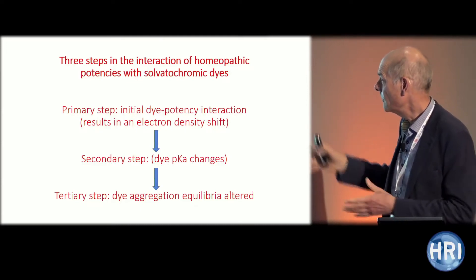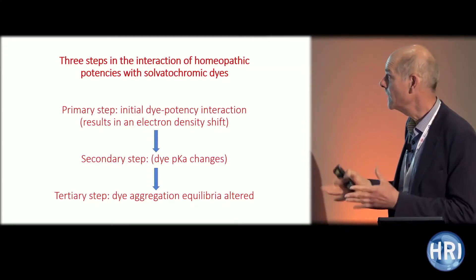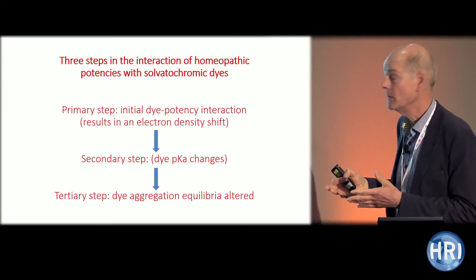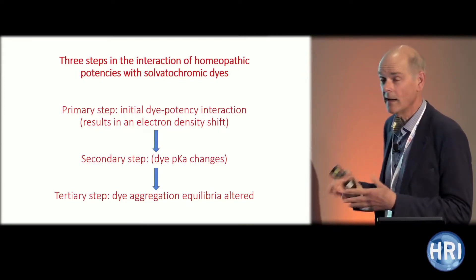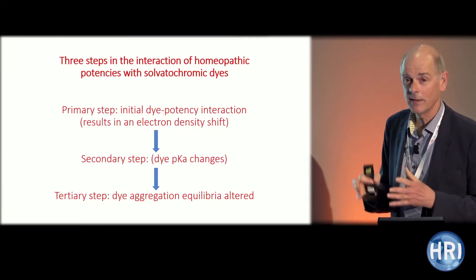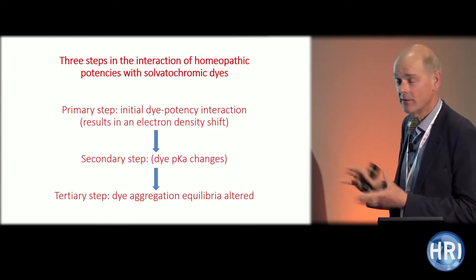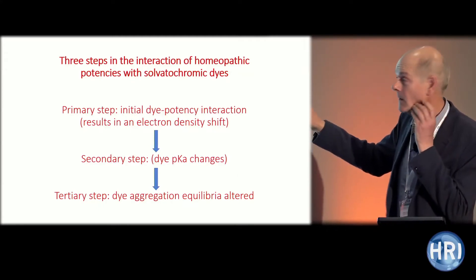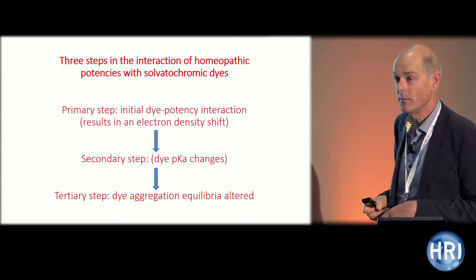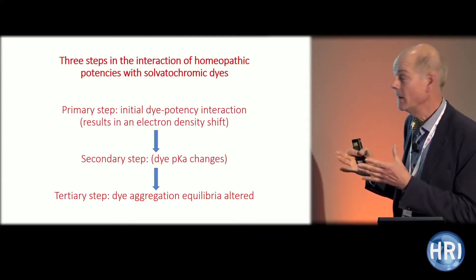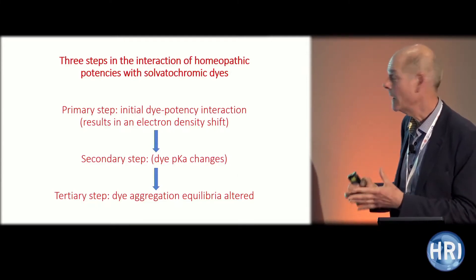There's a primary dye-potency interaction that's electronic in nature, resulting in an electron density shift — that's really crucial, and it only happens with solvatochromic dyes. The secondary step, as a result of the first, is that the dye's pKa changes — the dissociation constant changes. The final step is that this changes dye aggregation equilibria, which tends to amplify the initial effect. The time has come to look at that primary initial interaction, because if we can isolate that, we can start to ask very specific questions about what potencies are.